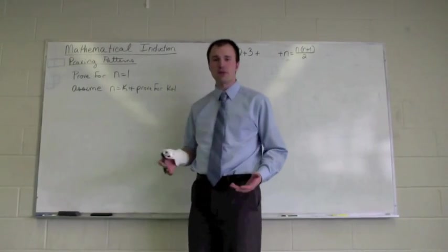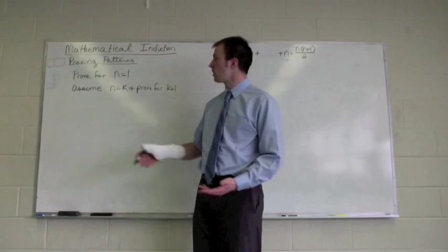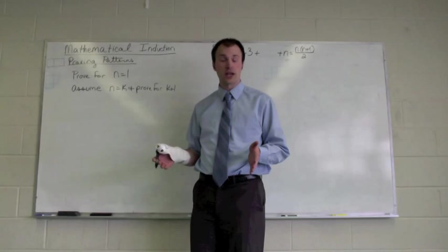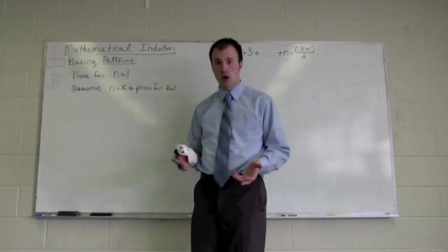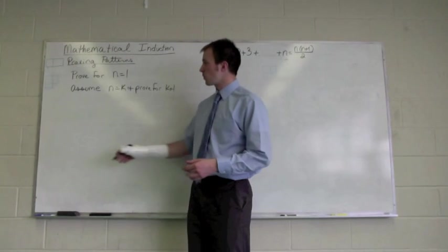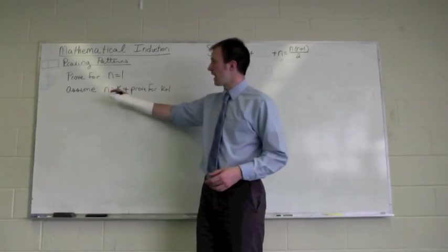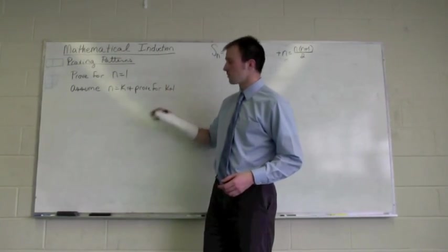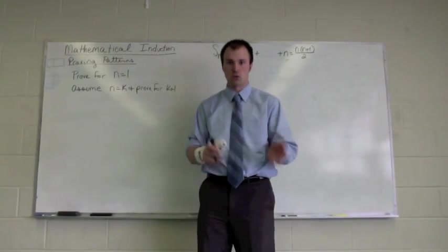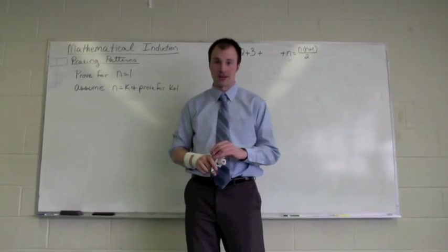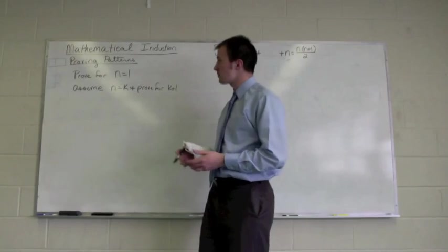The two biggest pieces of mathematical induction are to first prove that it's true for the number one. Prove that the pattern is true for the number one. This gives us a basis to work from. And then what we're going to do is we're going to assume that n is equal to k, and then we're going to prove it again for k plus 1. Because if we can do that, then there's really a big domino effect that happens. So those are the two big steps that we're going to take.